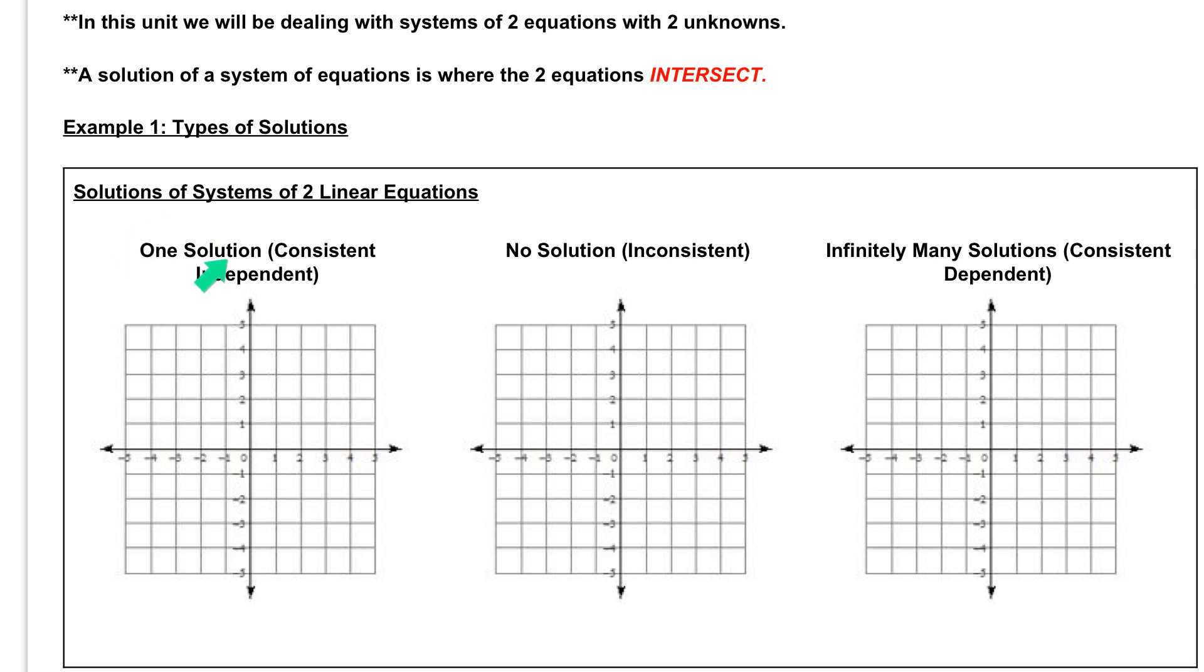Our first choice is that we could have one solution, which ALEKS calls consistent independent. So these terms here in the parentheses are what you're going to refer to when you're looking at ALEKS. So one solution is consistent independent, and that means you will have two lines that are intersecting at just one point.